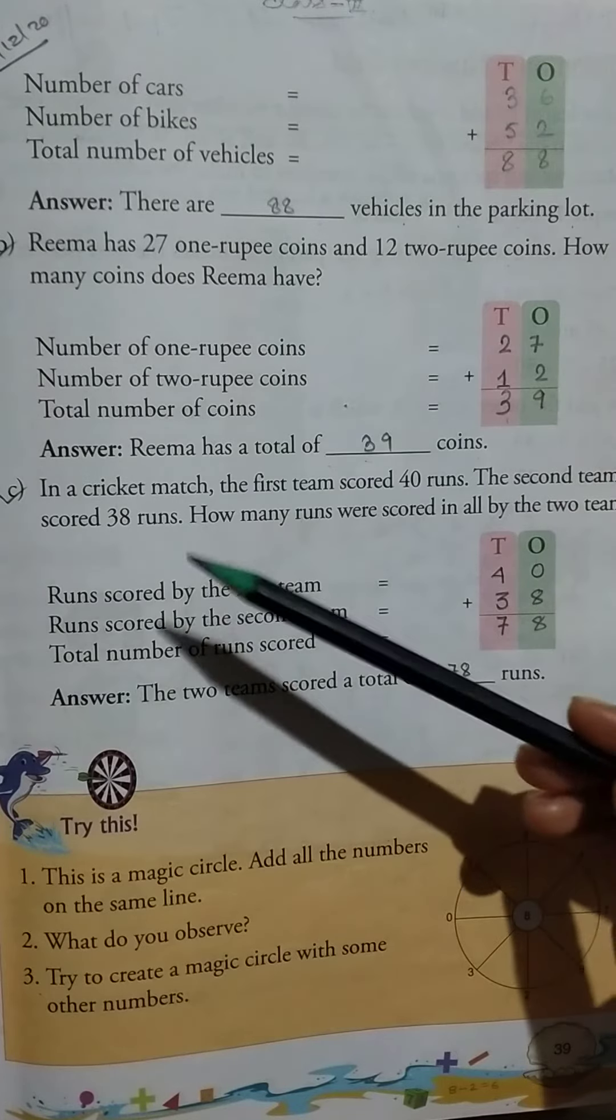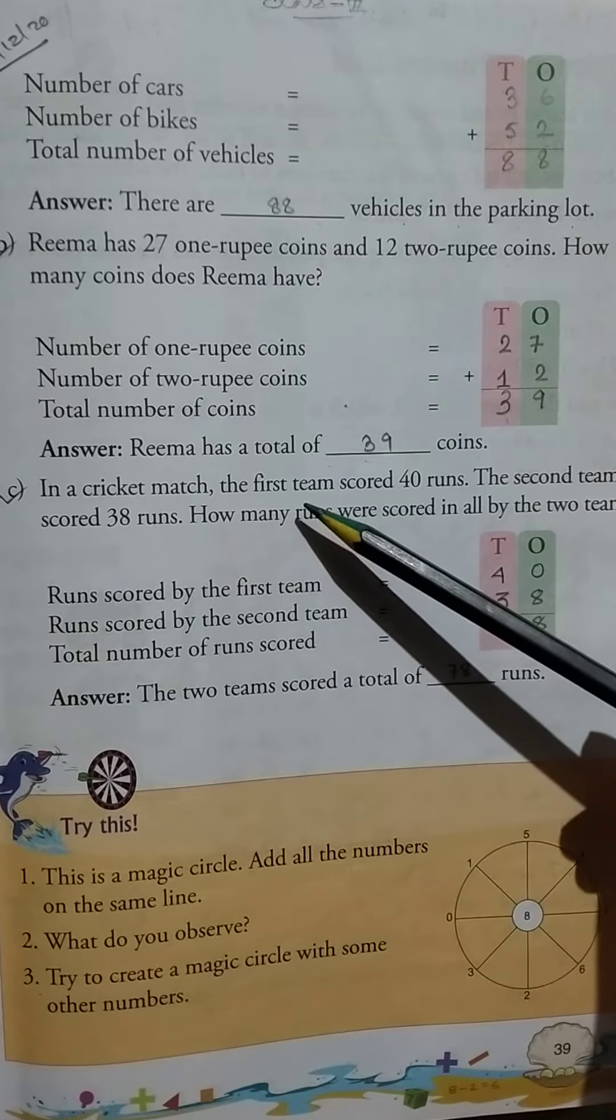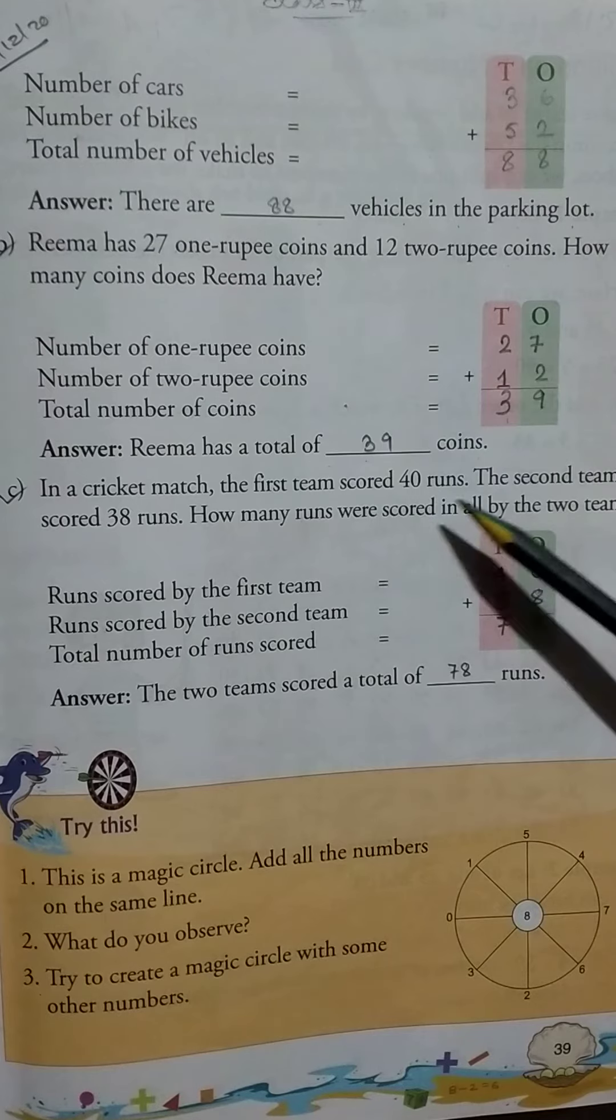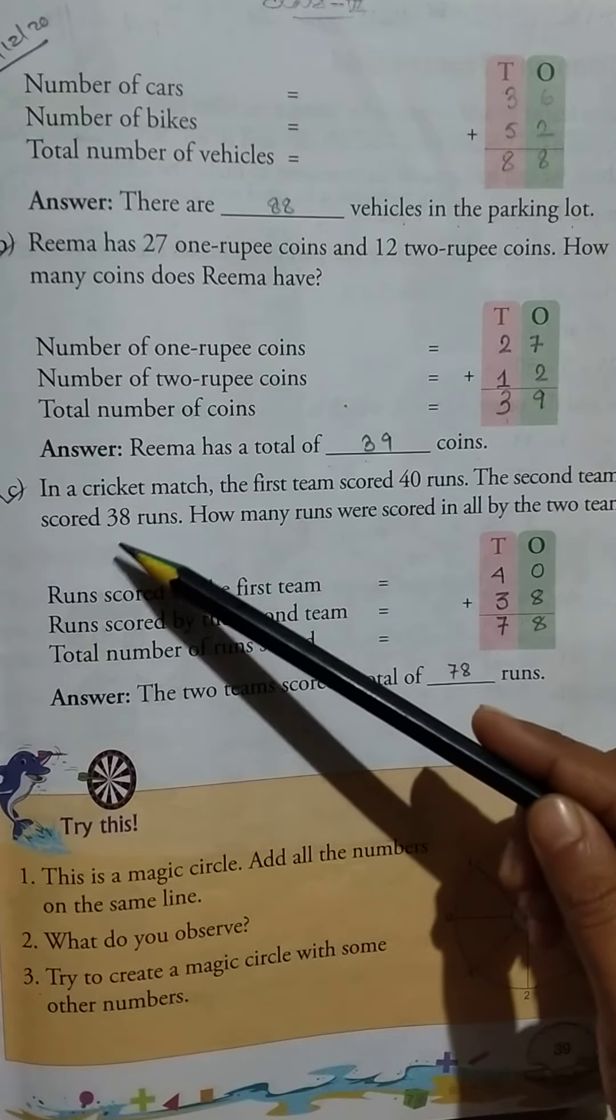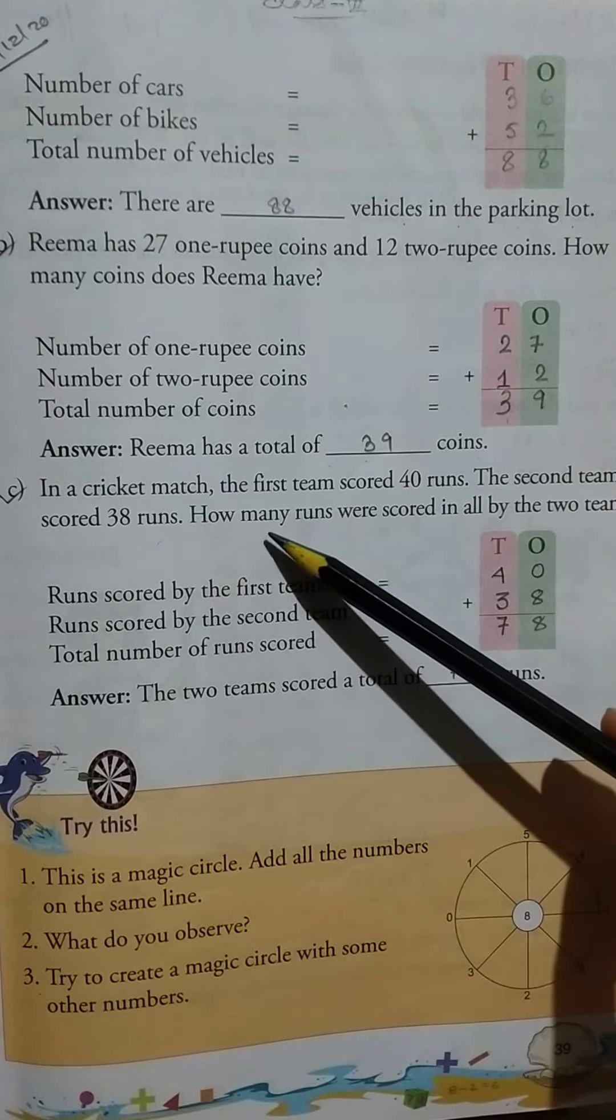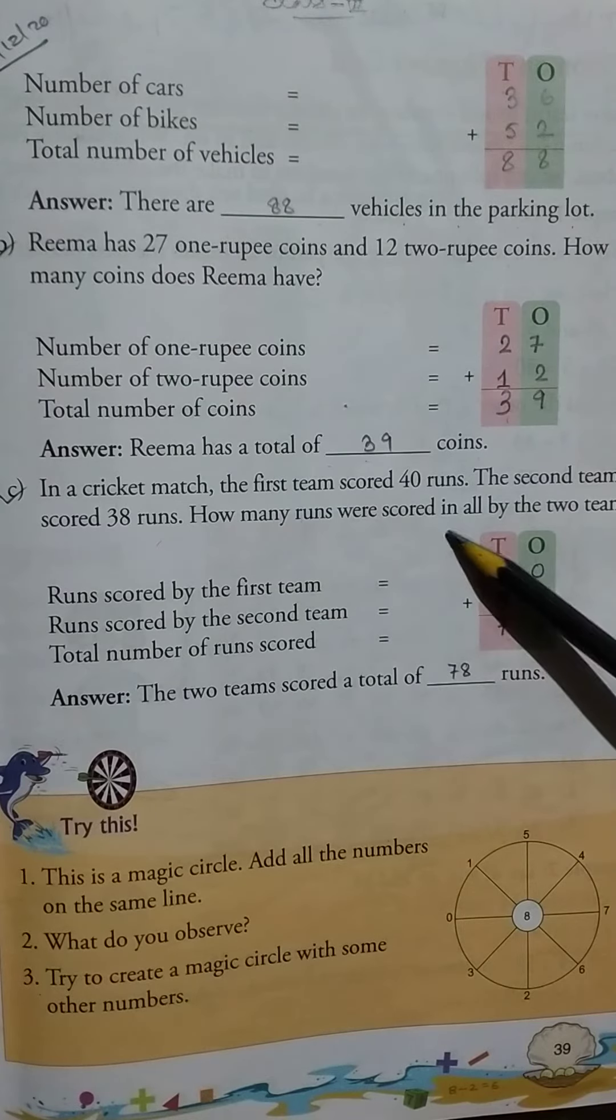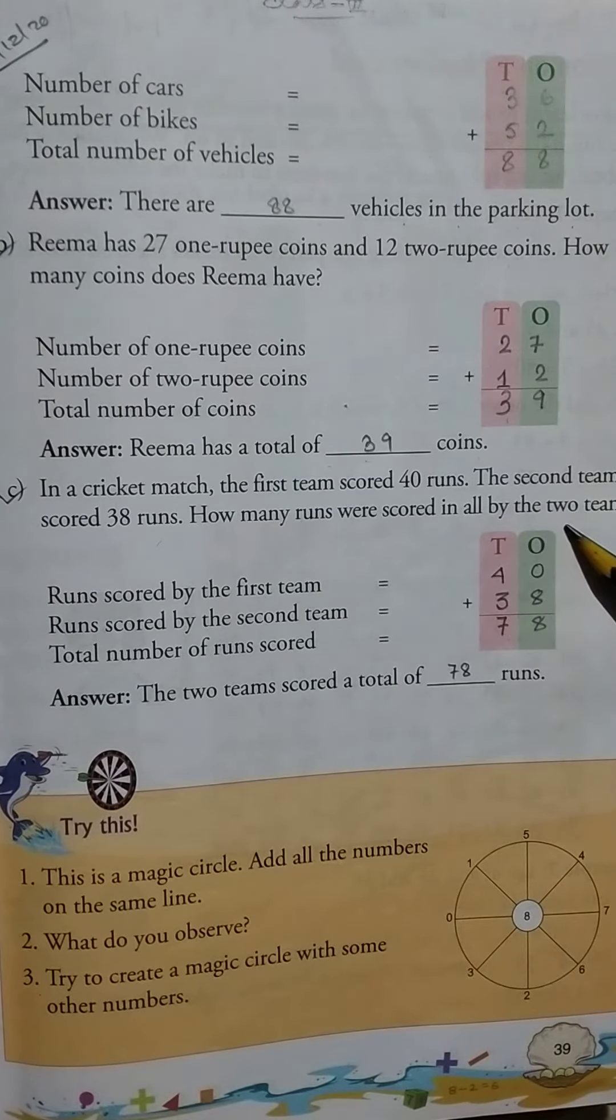Number C: In a cricket match, the first team scored 40 runs. The second team scored 38 runs. How many runs were scored in all by the two teams?